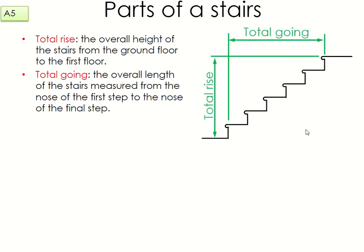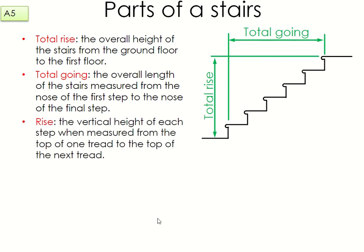This is what these measurements would look like: the total rise is basically from ground level to the second or first floor — whatever that height is, eight foot or whatever. The total going is measured from the nose of the first step to the nose of the final step. These two measurements are what you would need if you're building stairs to suit a certain house.